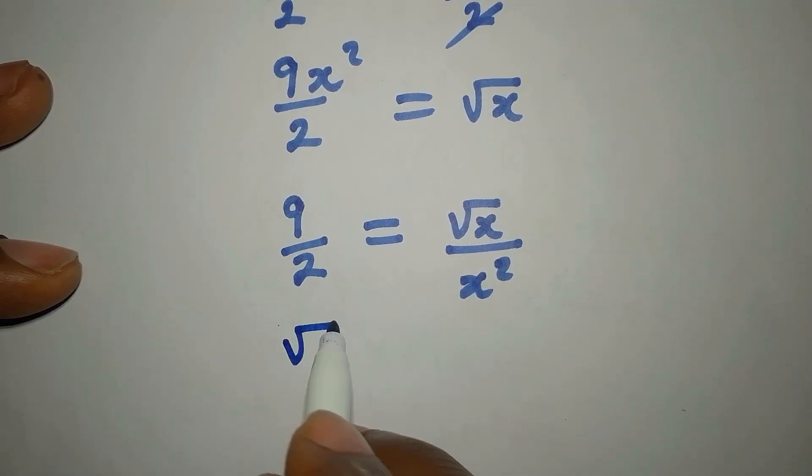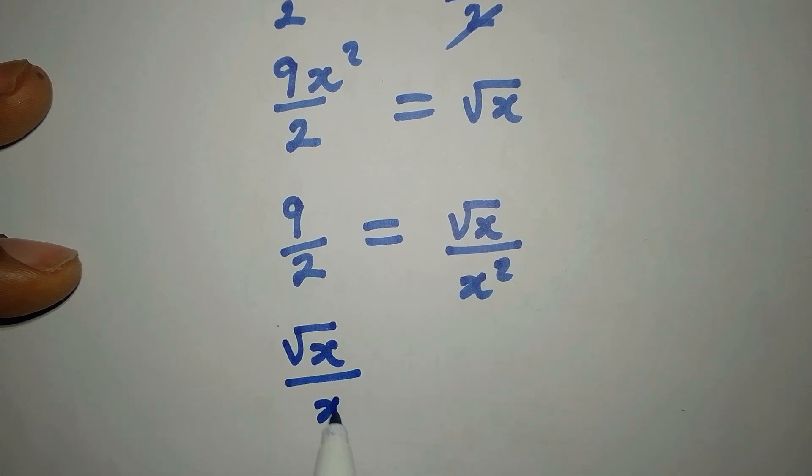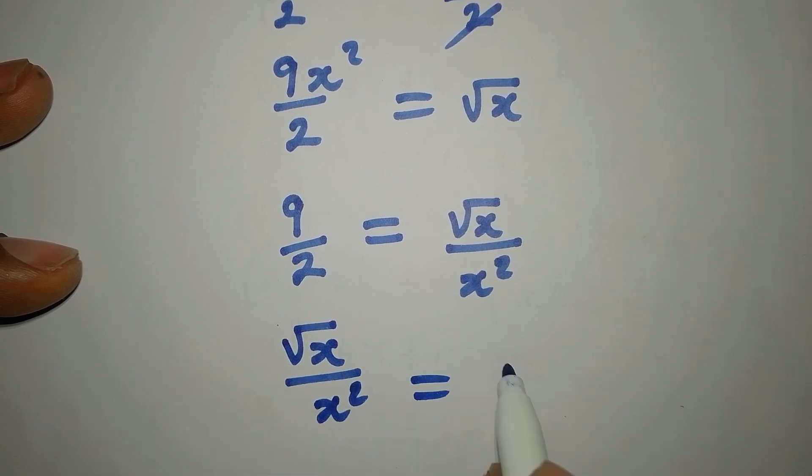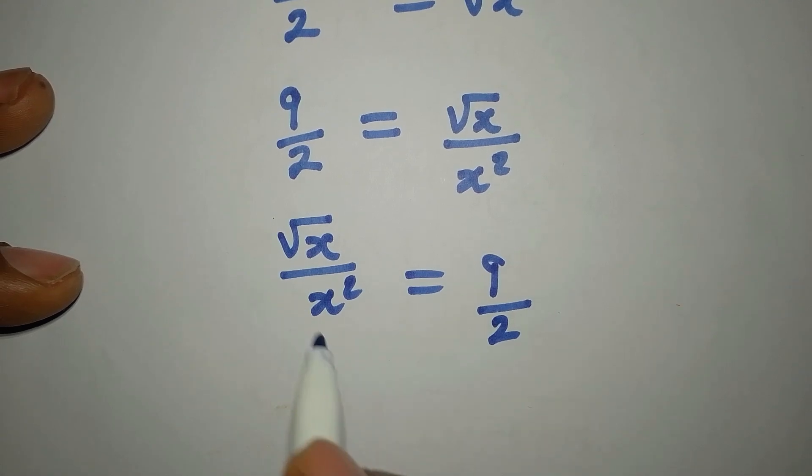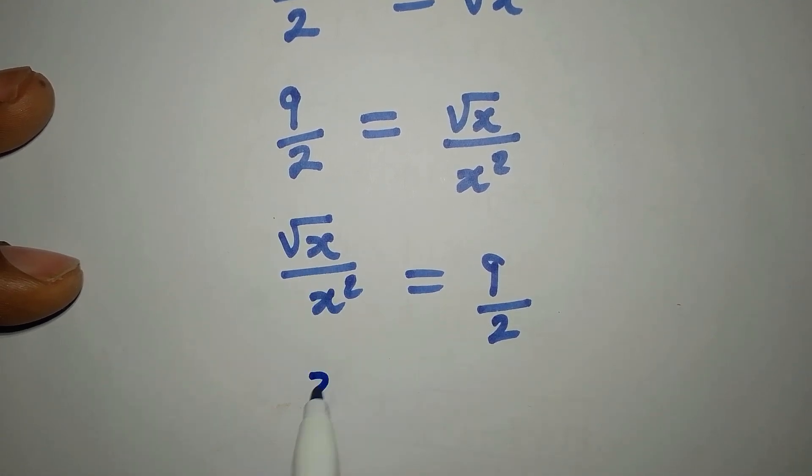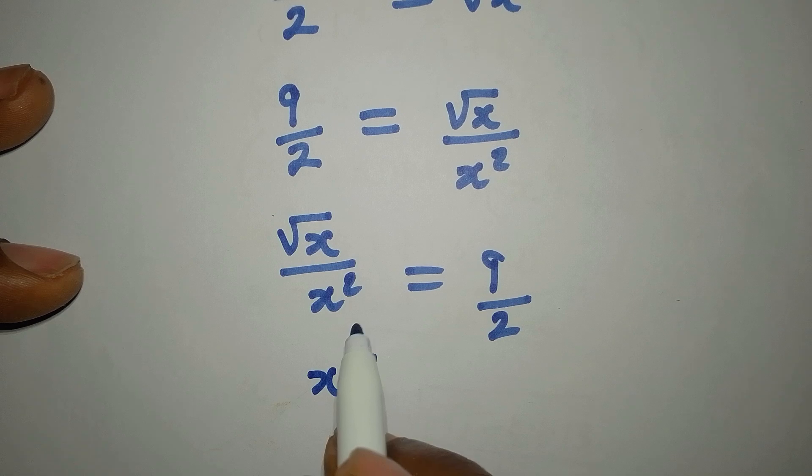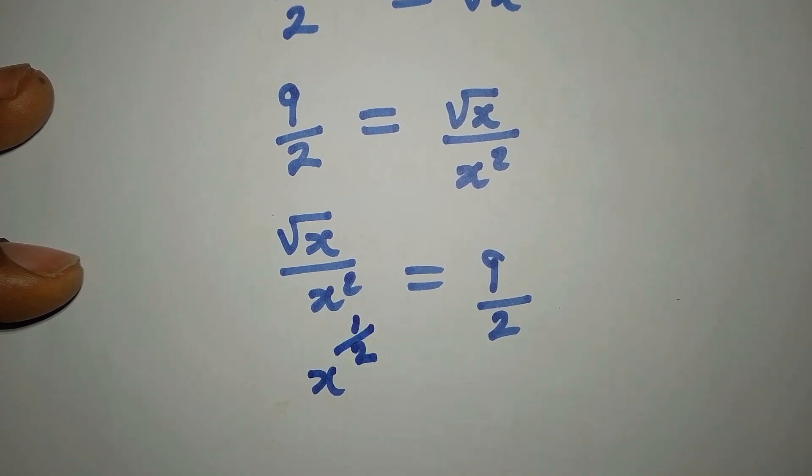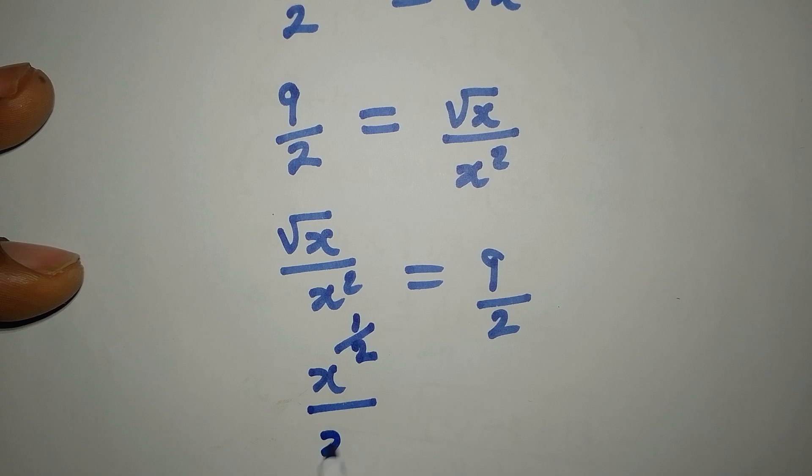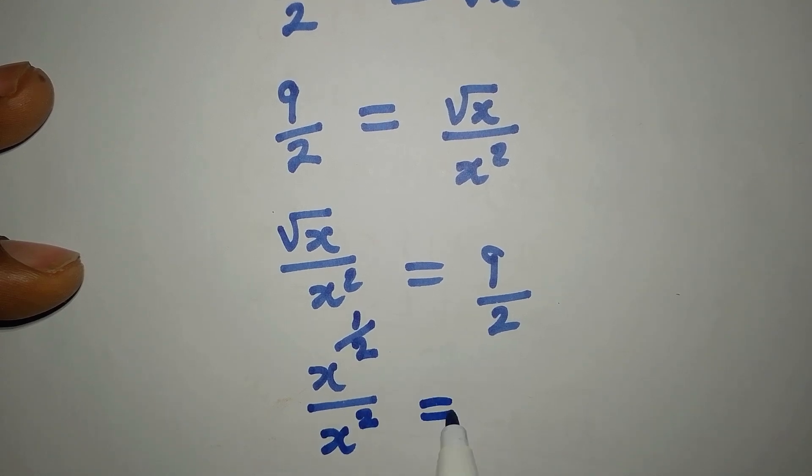Now let's write this first, so we have √x/x² = 9/2. By the way, square root of x is the same thing as x^(1/2). That's the same thing as square root of x, and this right here is x². So this is equal to 9/2.